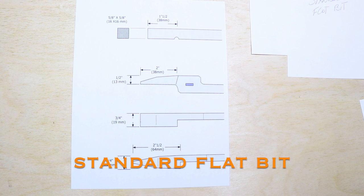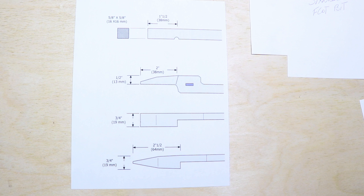The first pair of tongs that you need to figure out are the standard flat bit tongs. They are the foundation for all the other tongs that you're going to make. Standard flat bit tongs have two jaws that are identical.